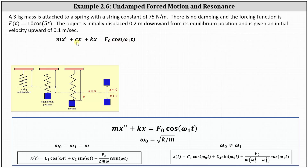Because c is equal to zero when there's no damping, we can simplify the differential equation to mx'' + kx = F₀ cos(ω₁t), where ω₀ = √(k/m). If ω₀ equals ω₁, the general solution takes the form shown on the left. If ω₀ does not equal ω₁, the general solution takes the form shown on the right.